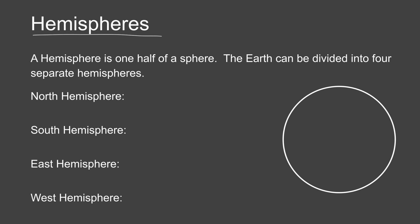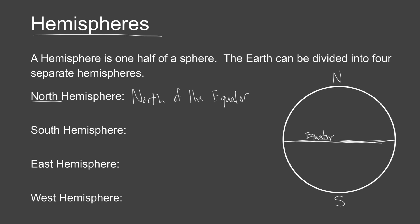We have a northern hemisphere. If we draw a line horizontally across the Earth and label it north and south, we can split the Earth into northern and southern hemispheres. The line that divides them is called the equator. The northern hemisphere is north of the equator, and the southern hemisphere is south of the equator. That's the first two ways we can separate the Earth in half.